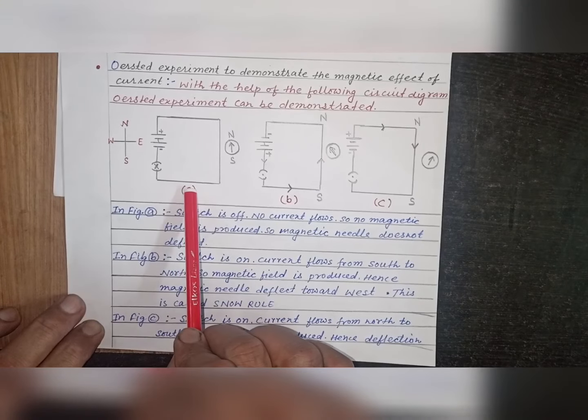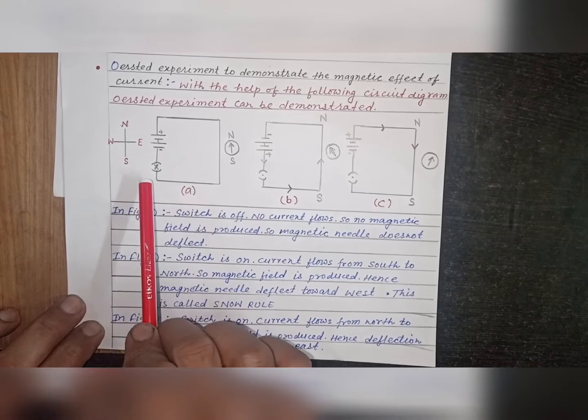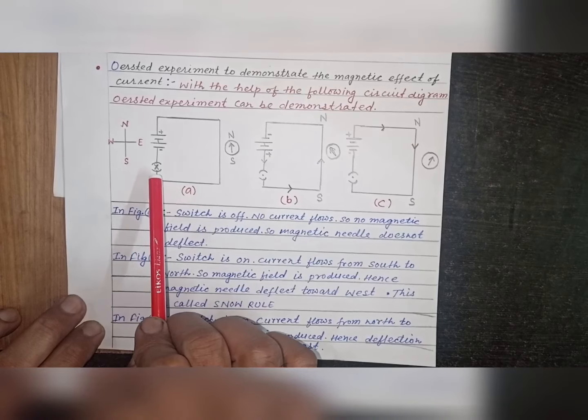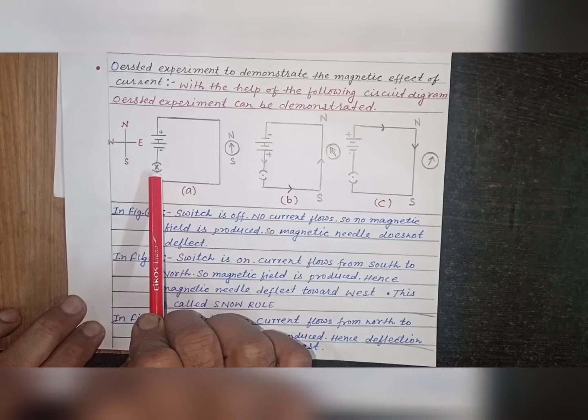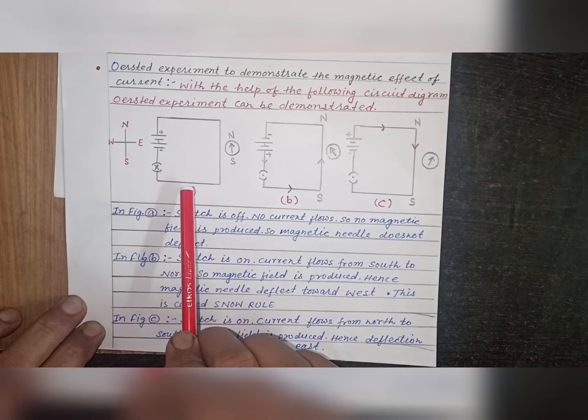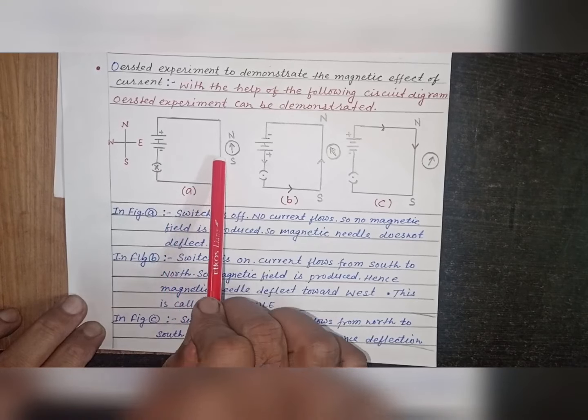In figure A, as shown, switch is OFF by cross mark. No current flows in the circuit.